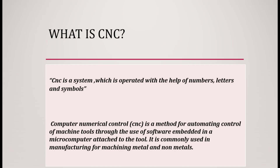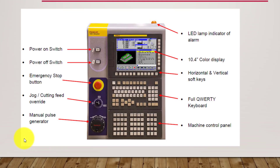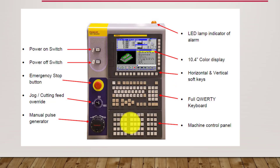Here I will show you the control system — this is the control panel in which the CNC is installed. In this picture you can see this is the CNC controlling system which is operated with the help of numbers, letters and symbols. These numbers, letters and symbols are inserted with the help of these keys.